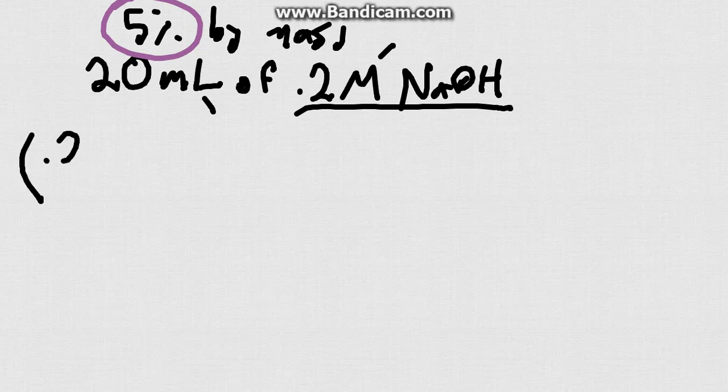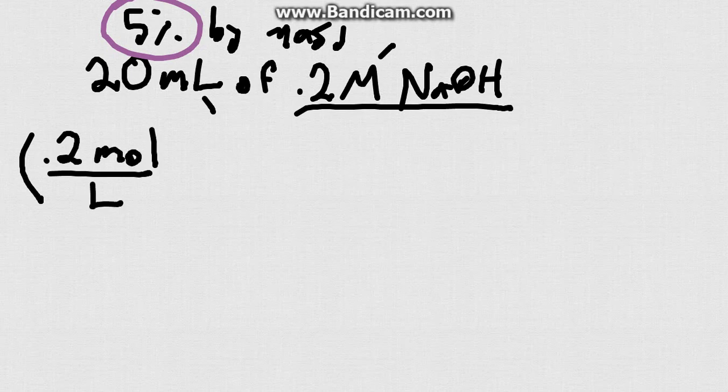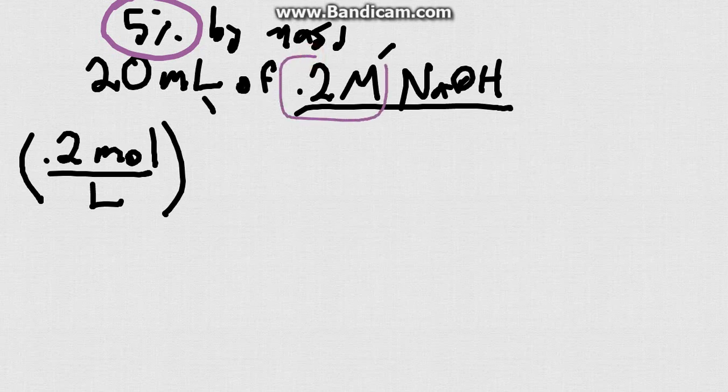So let's do 0.2 moles per liter, which is what this molar concentration means right here, and you have to know that molar means moles per liter. So then what can we multiply this to get moles by itself? Well, since we've got this liters on bottom, we just need to multiply it by liters. So we need to figure out how many liters do we have in 20 milliliters. So that's going to be 0.02.